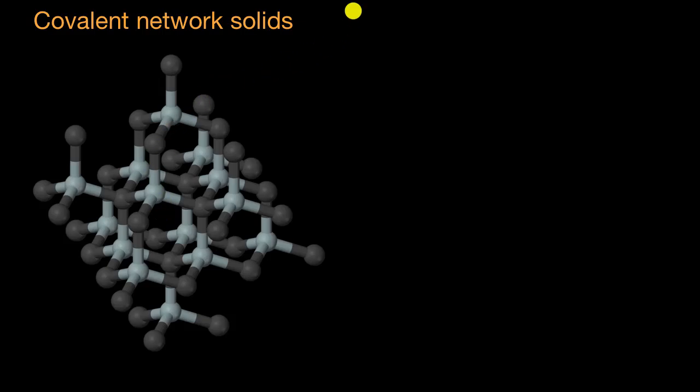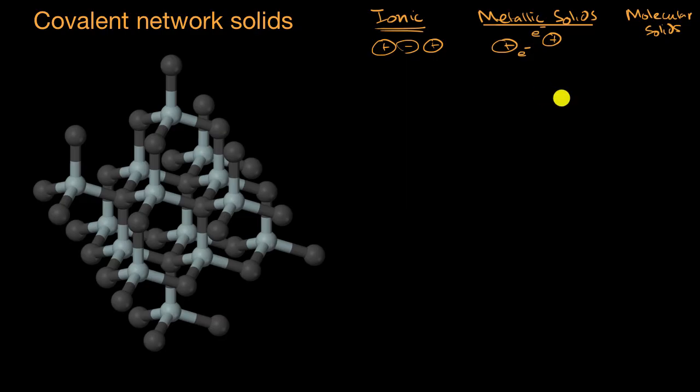We've already talked about multiple types of solids. We've talked about ionic solids that are formed when ions are attracted to each other and form lattice structures. We've seen metallic solids and thought about them as positive ions in a sea of negatively charged electrons. And we've also seen molecular solids, which are formed from individual molecules attracted to each other through intermolecular forces.